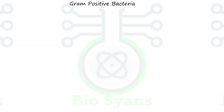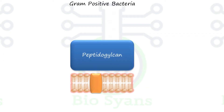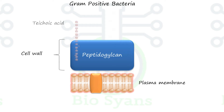In gram-positive bacteria, the cell wall is thick and contains several layers of peptidoglycan. They lack the outer membrane. Running perpendicular to the peptidoglycan sheets is a group of molecules called teichoic acids, which are unique to gram-positive bacterial cell walls.